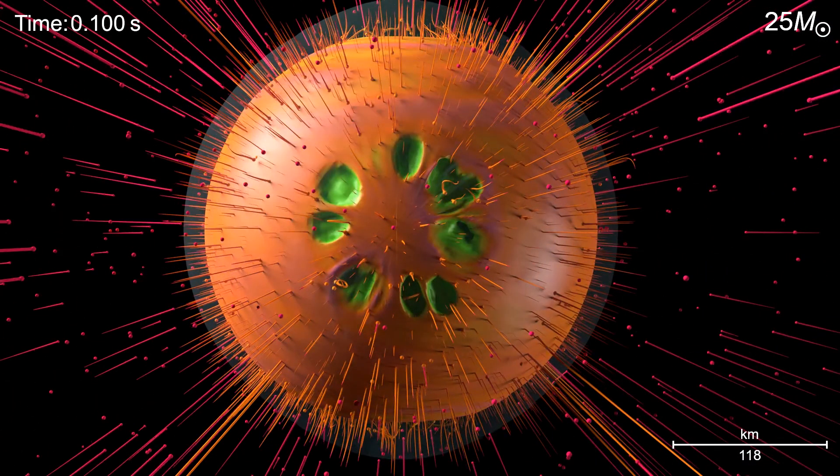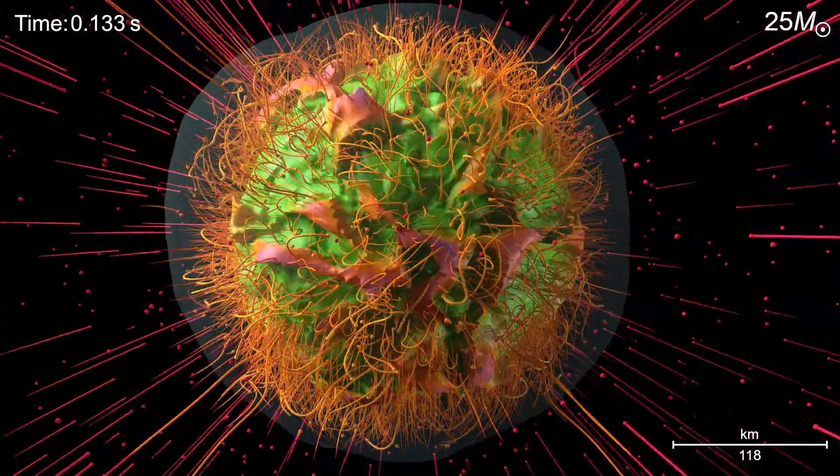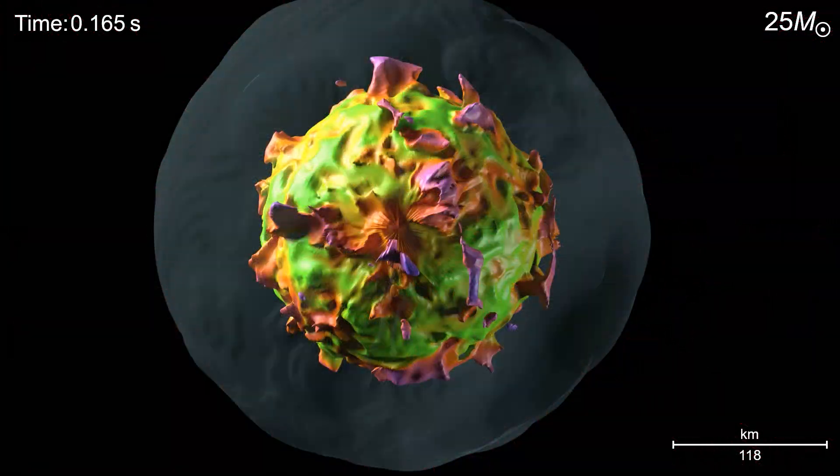But that shock stalls and matter continues to flow through it. Here we see tracer particles, which illustrate how matter is falling in. This outer surface is the shock wave, the exterior of the explosion.